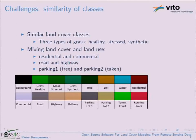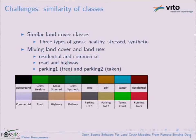One challenge that turned out to be more difficult than similar land cover classes was that some classes mixed land cover and land use. Land cover relates to what's physically on the ground, but with land use the classes can look identical from texture and material — it's just how we use them. For example, residential and commercial areas look the same to remote sensing, as do roads and highways — they're built from the same material but differ by use.